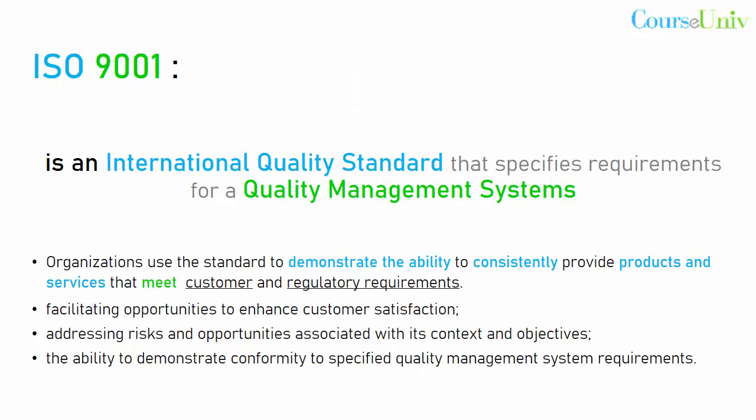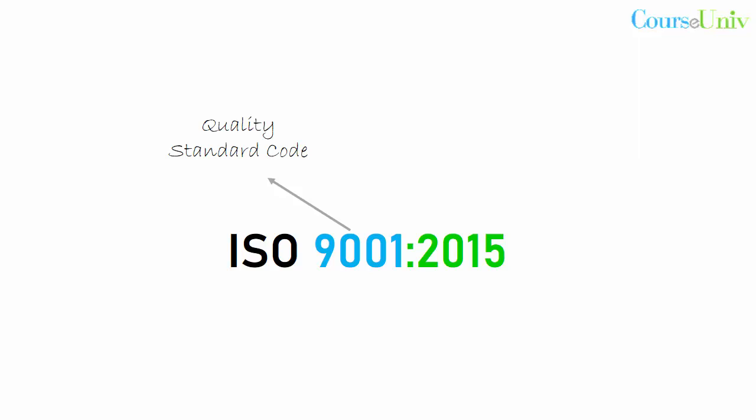The ISO has established and published many standards to date, generally named as quality management systems under the series ISO 9000. The standard ISO 9001:2015 stands for ISO 9000 — meaning quality management systems — and 2015 is the year of publication. Every five years, the standards go in for revision and the revised standards are implemented by organizations.